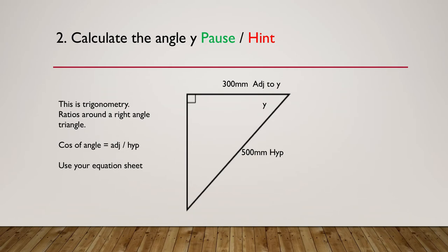The hint is this is trigonometry, so it's ratios around a right angle triangle. So I've got to think about which one you're going to use, and if you're going to use an adjacent and a hypotenuse, then it's probably going to be the cosine of the angle. So again, turn to your equation sheet. So pause here if you need to.